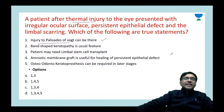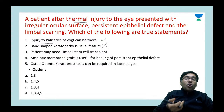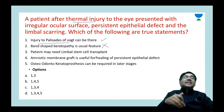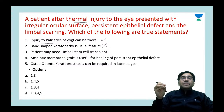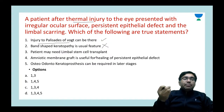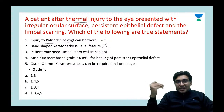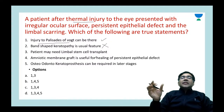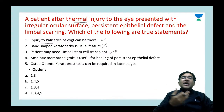Band-shaped keratopathy is not a usual feature of thermal injury — it is seen in patients with hypercalcemia, silicone oil inside the anterior chamber, or chronic uveitis. So point 2 is false. For point 3: if the patient has limbal stem cell deficiency, limbal stem cell transplant can be performed — taking stem cells from the other eye (autograft) or from another person (allograft) and implanting them at the palisades of Vogt. Point 3 is correct.